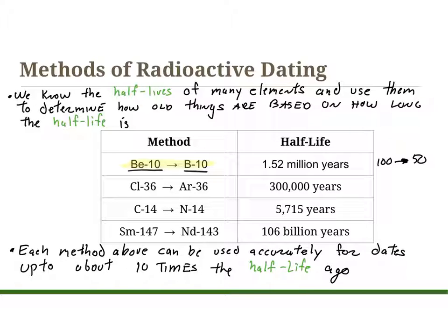Carbon-14 has a half-life of 5,700 years, so ten times that is about 57,000 years — meaning it's only accurate for dating up to that period of time. For objects older than that, we would use something like chlorine, which decays to argon after 300,000 years.